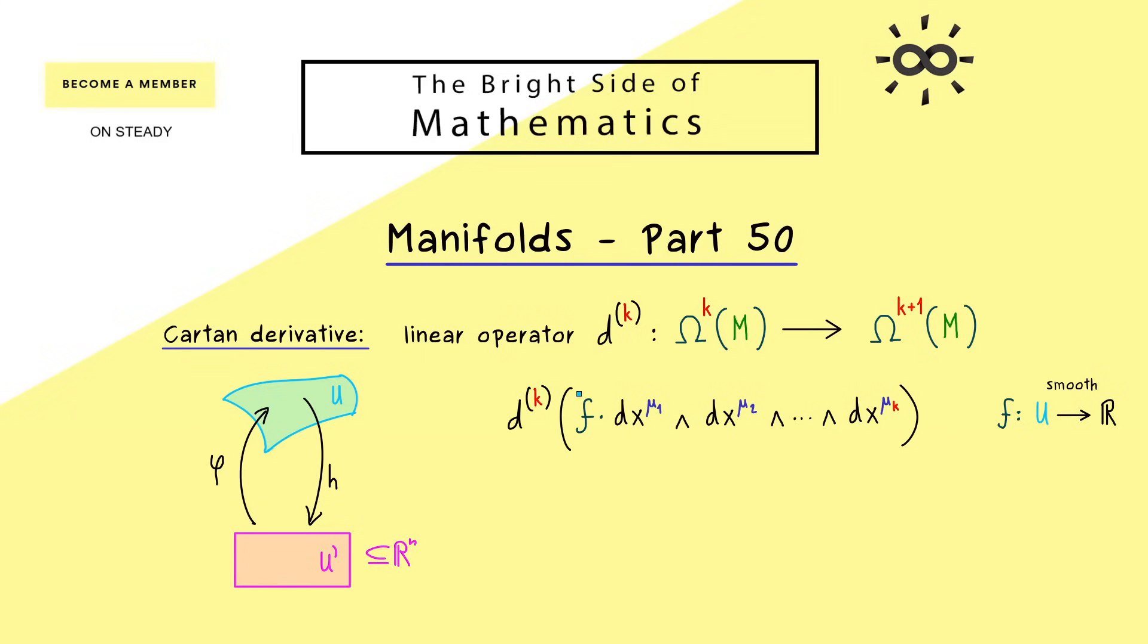So if we see M as given by U, we can just apply our d^k operation. There we can use the definition from the last video, which just tells us that this exterior derivative is pushed to the smooth function f, which means we get the ordinary differential df connected with the wedge product to the other one-forms. So we immediately recognize that this definition brings us to a k+1 form. Please remember this important formula - this is what happens with the Cartan derivative on a chart.